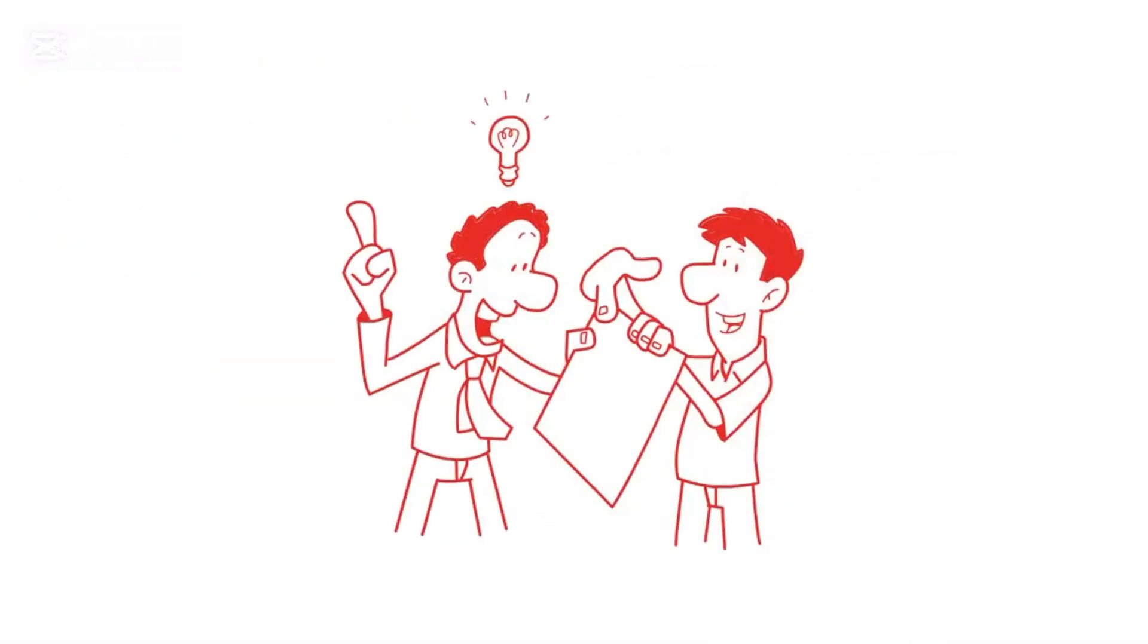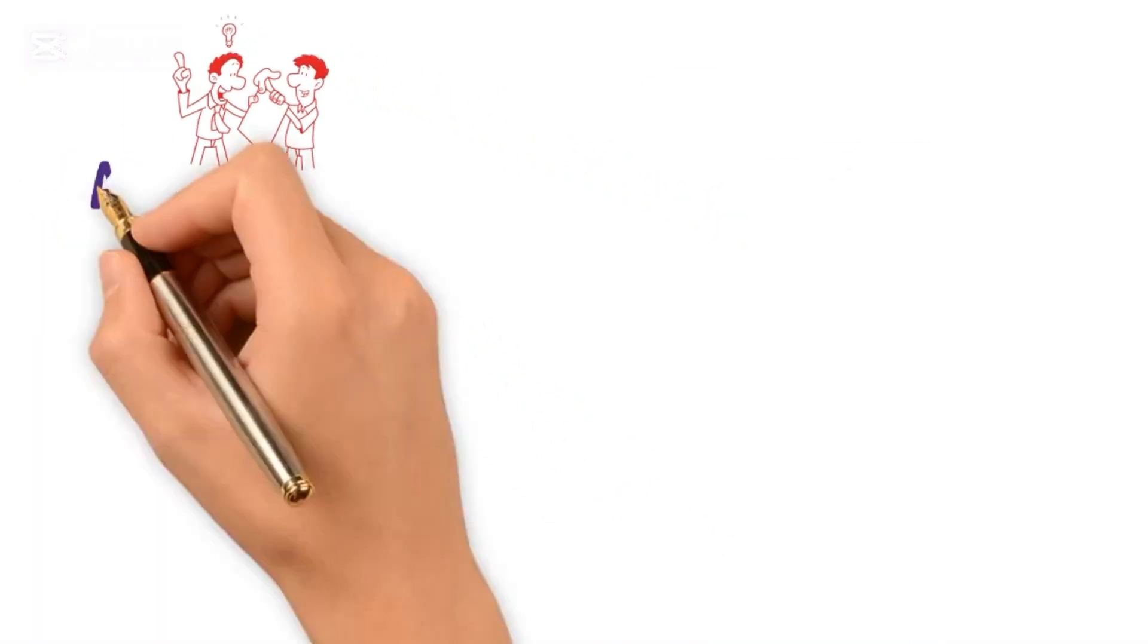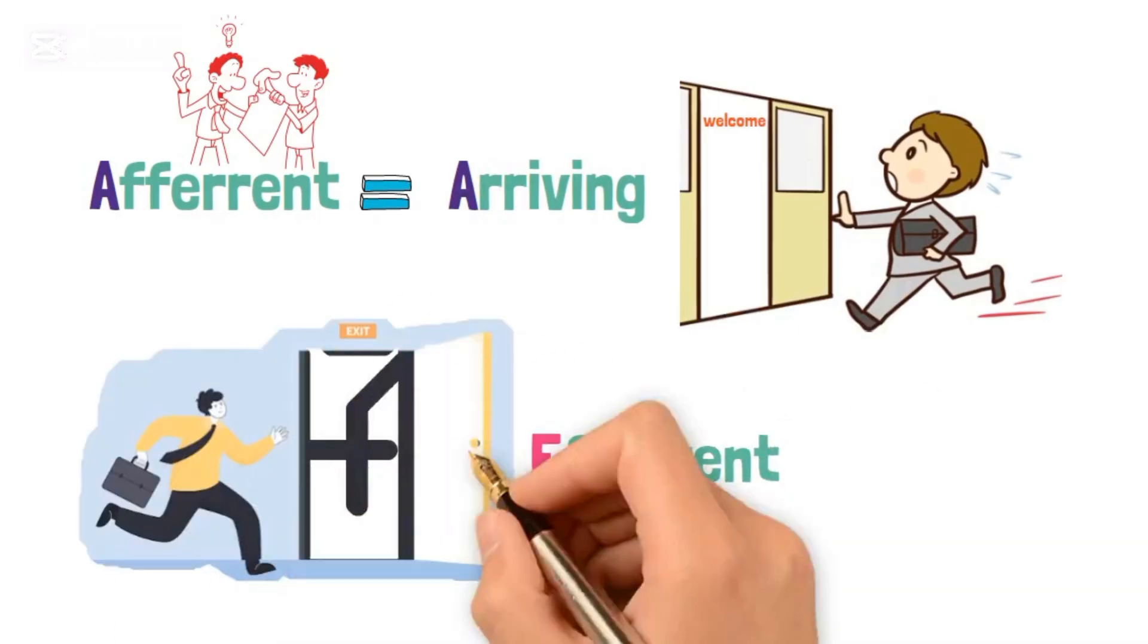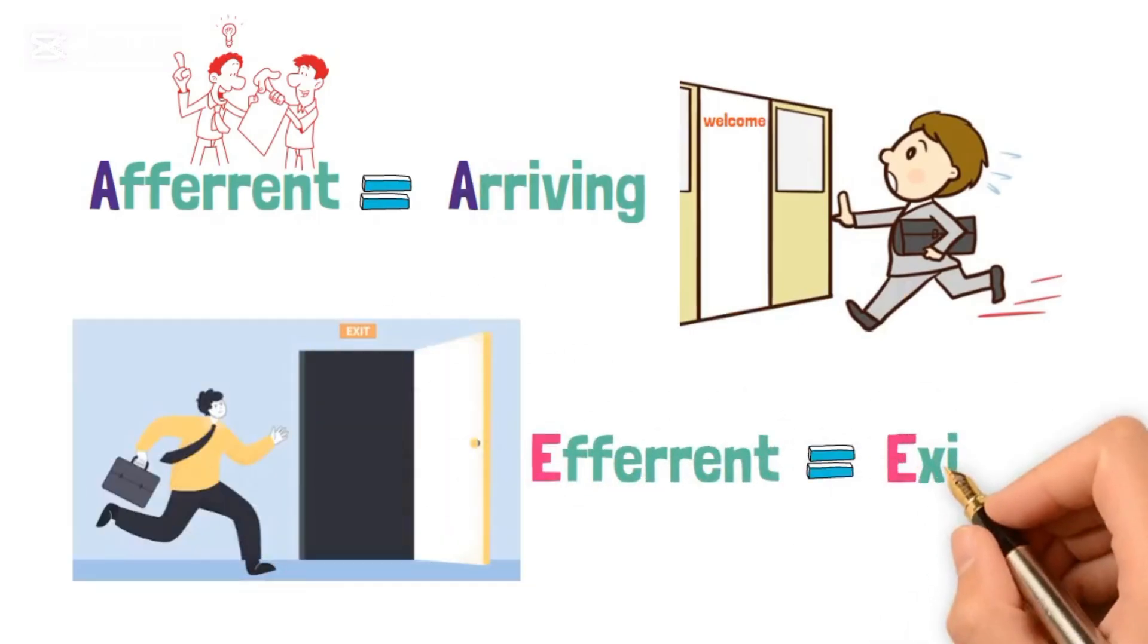A popular memory trick is to remember A in afferent stands for signals arriving to the central nervous system, and E in efferent stands for signals exiting the central nervous system.